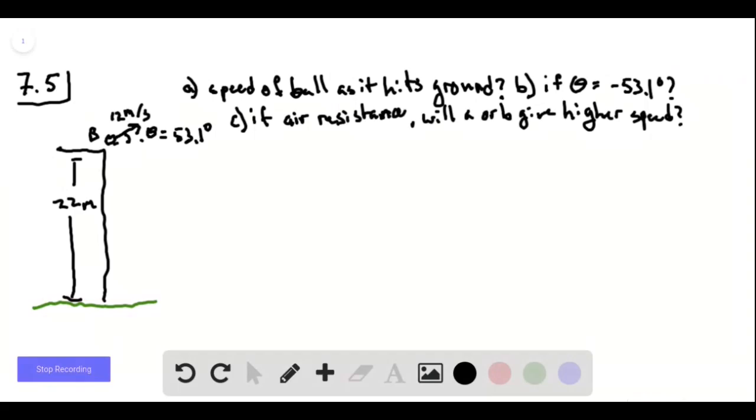And part C, if we take into account air resistance, which we're ignoring for A and B, which one of these two situations will cause it to hit the ground at a higher speed?